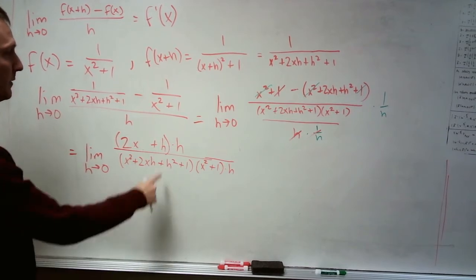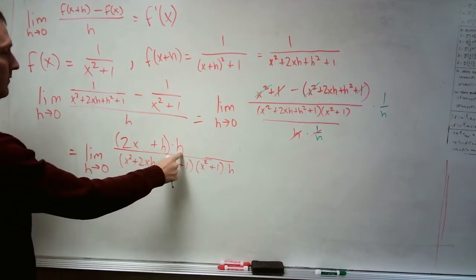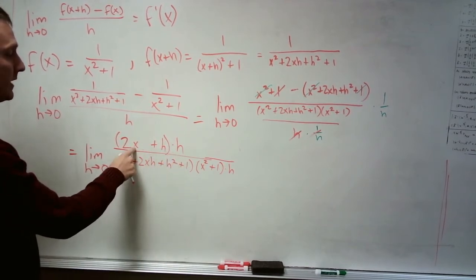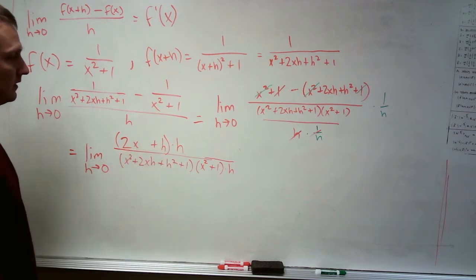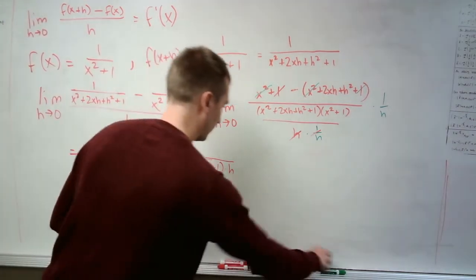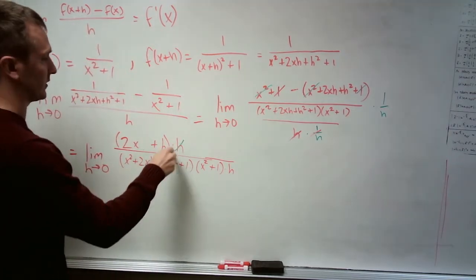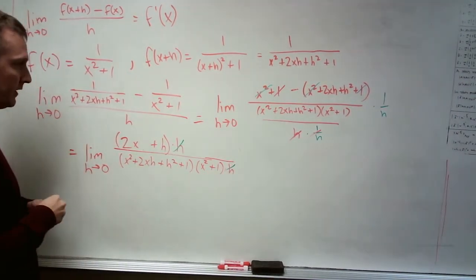So the h squared became an h after factoring it out, 2x times h became just 2x after we take out the h. And the reason we do that in the simplification process is because we've got an h now on bottom and on top, that'll cancel out.